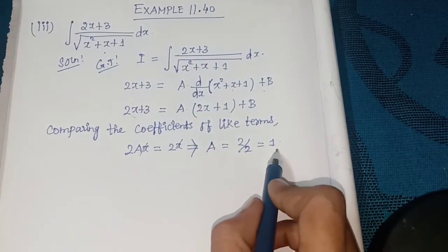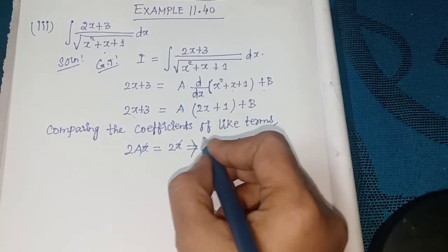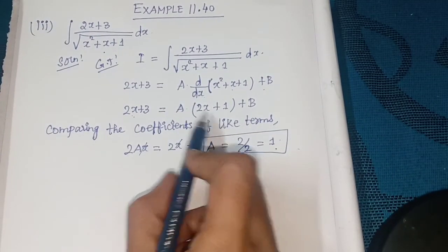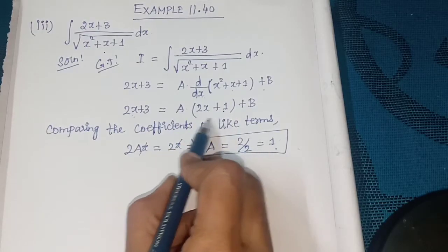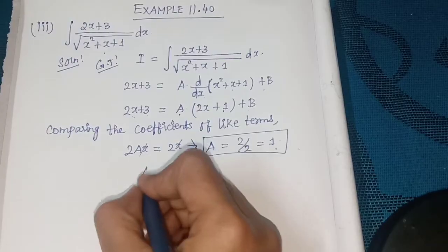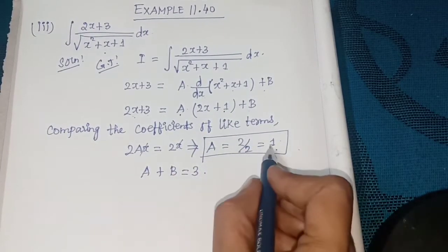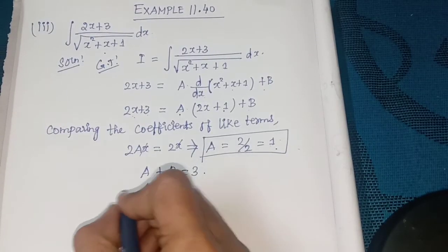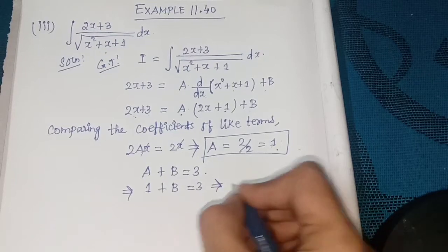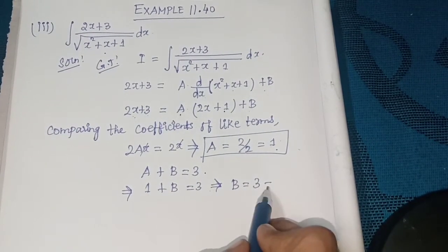So a = 1. Next, comparing constant terms: a + b = 3, so 1 + b = 3, which implies b = 3 − 1 = 2.